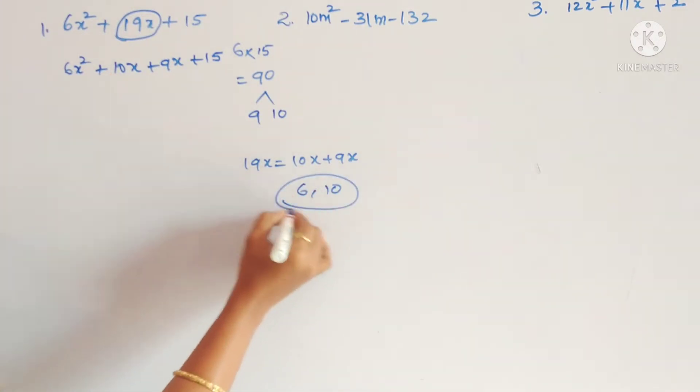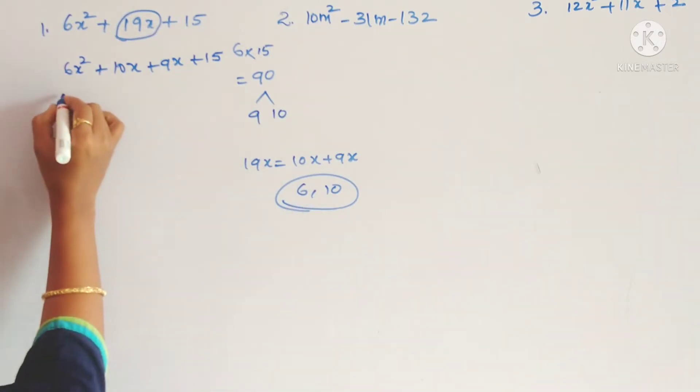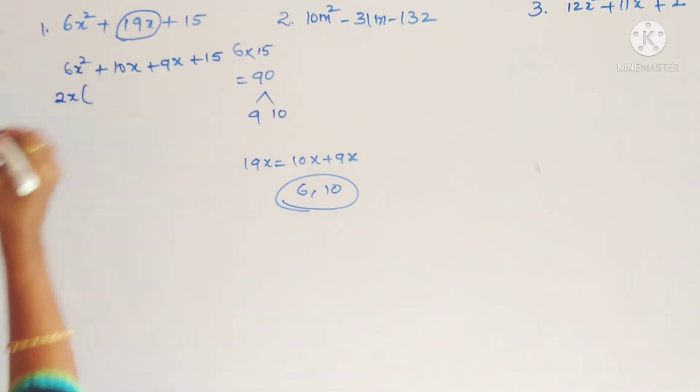Now see here 6 and 10, so what is the common factor for 6 and 10? Only 2. In 2 table, 6 and 10 are there. 2 threes are 6, 2 fives are 10. So 2x we take as common, and one more x is there.